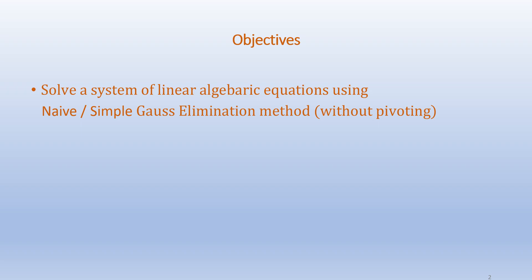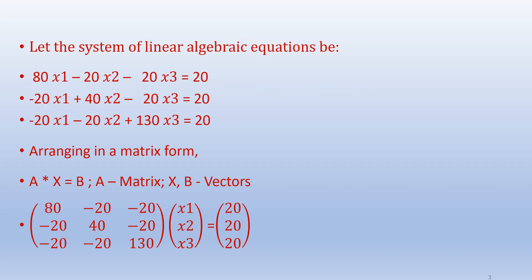We call it a naive or simple Gauss elimination method because we are not using the pivoting method. Pivoting is basically rearranging the rows of a system of equations so that they can be solved easily.